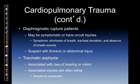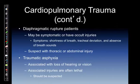Diaphragmatic ruptures may be symptomatic or have occult injuries. Symptoms include shortness of breath, tracheal deviation, and absence of breath sounds. Suspect with thoracic or abdominal injuries, as those lower rib cages on both sides could lacerate the diaphragm easily. Traumatic asphyxia results from a sudden compression force of the chest between two surfaces, forcing blood rapidly into the upper thorax, face, and increasing capillary pressures, resulting in capillary rupture. It is associated with loss of hearing and vision, and associated injuries are often lethal.